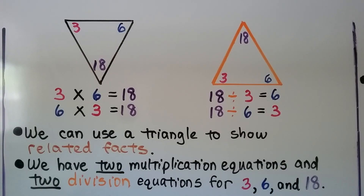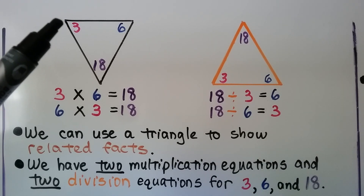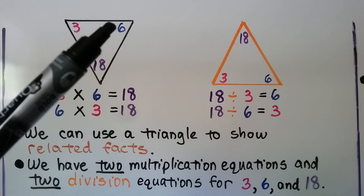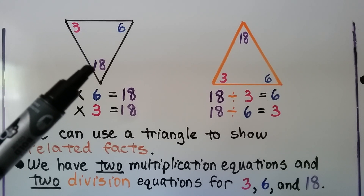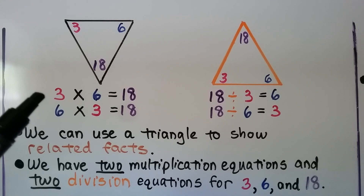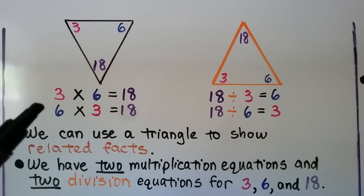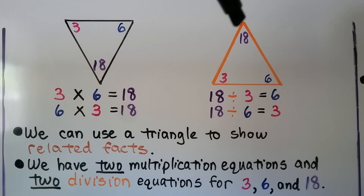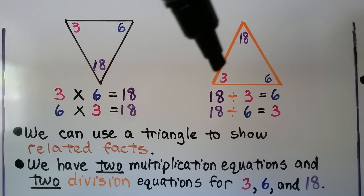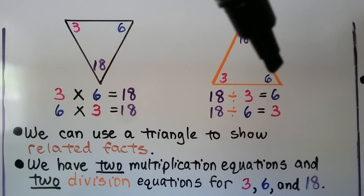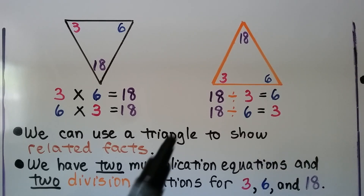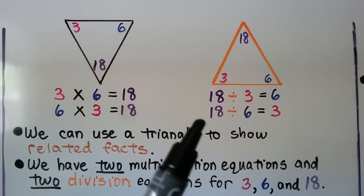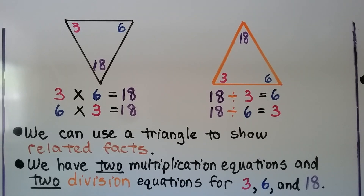We can use a triangle to show related facts. We have a factor 3 in this corner, the other factor 6 in this corner, and the product 18 down here. We have 2 multiplication equations: 3 times 6 is equal to 18 and 6 times 3 is equal to 18. Here we have our dividend 18 and we have a 3 in this corner and a 6 in this corner. And we can write 18 divided by 3 is equal to 6, or 18 divided by 6 is equal to 3.